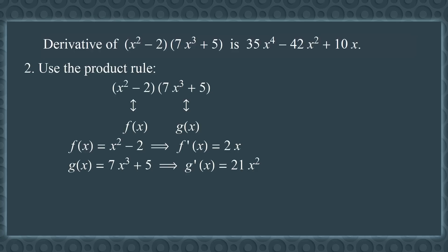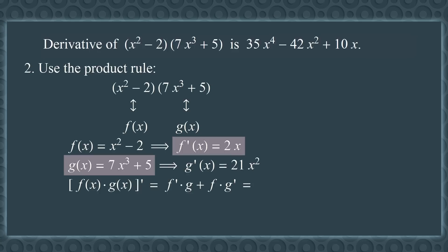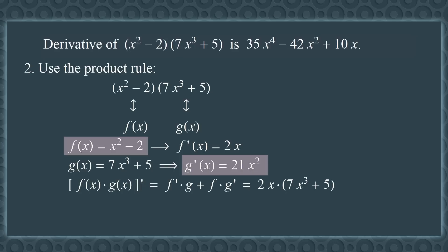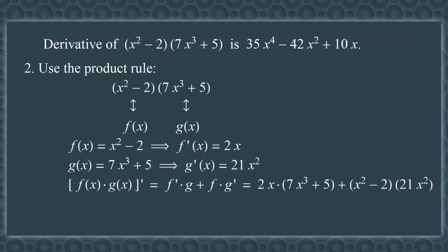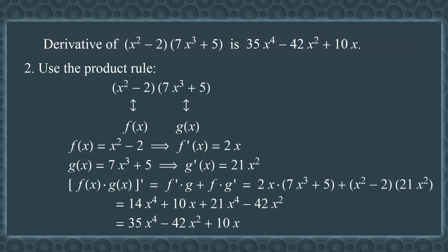Remember, the product rule says that the derivative of fg equals f′g plus fg′. Now we just plug in everything we computed. So f′ times g is 2x times (7x³ + 5). And f times g′ is (x² − 2) times 21x². Multiplying these out, we get 14x⁴ + 10x + 21x⁴ − 42x². Combining like terms, we get 35x⁴ − 42x² + 10x. That's the right answer.